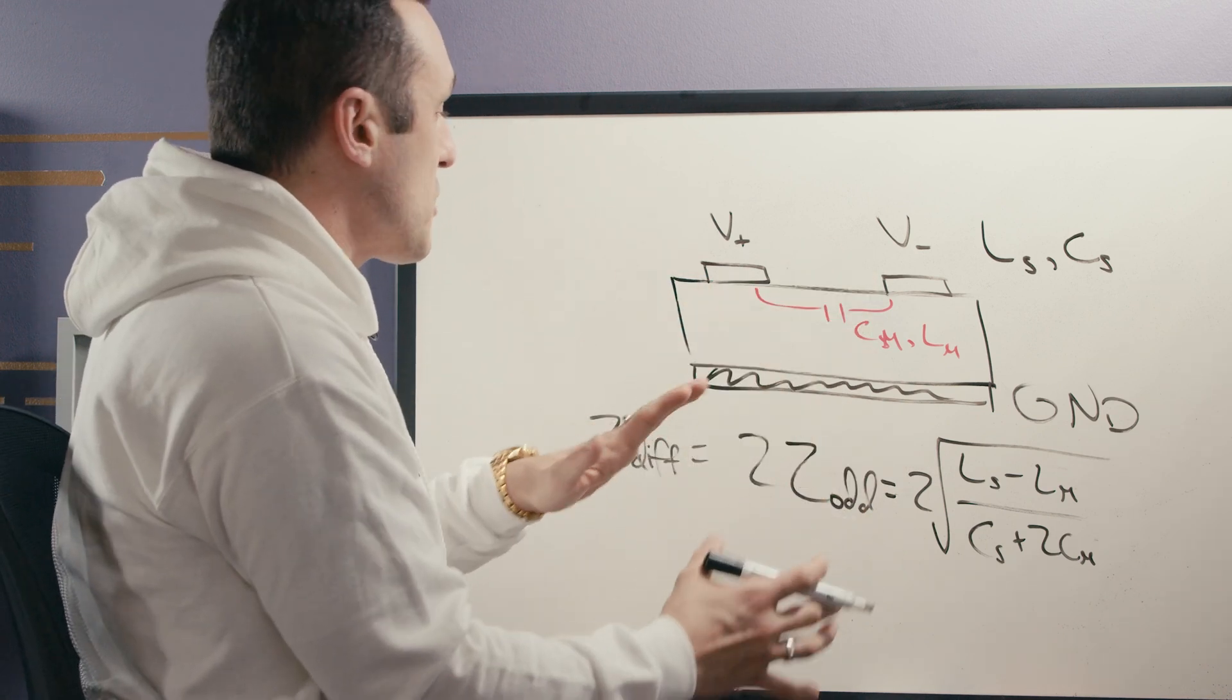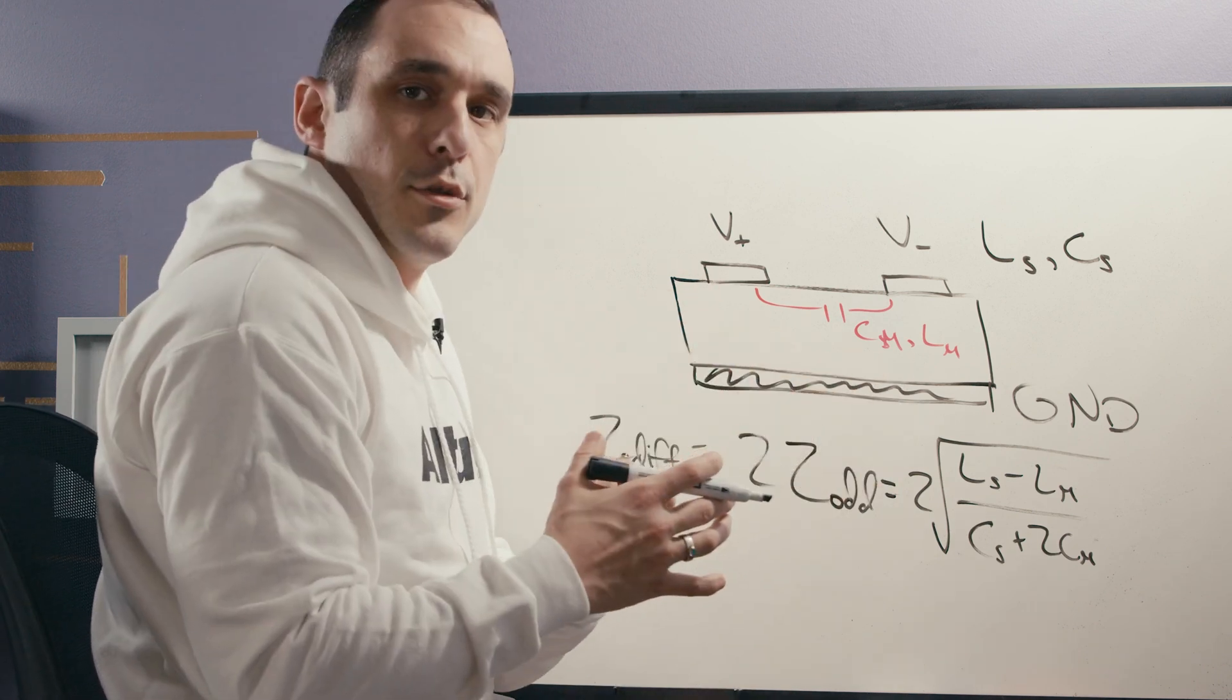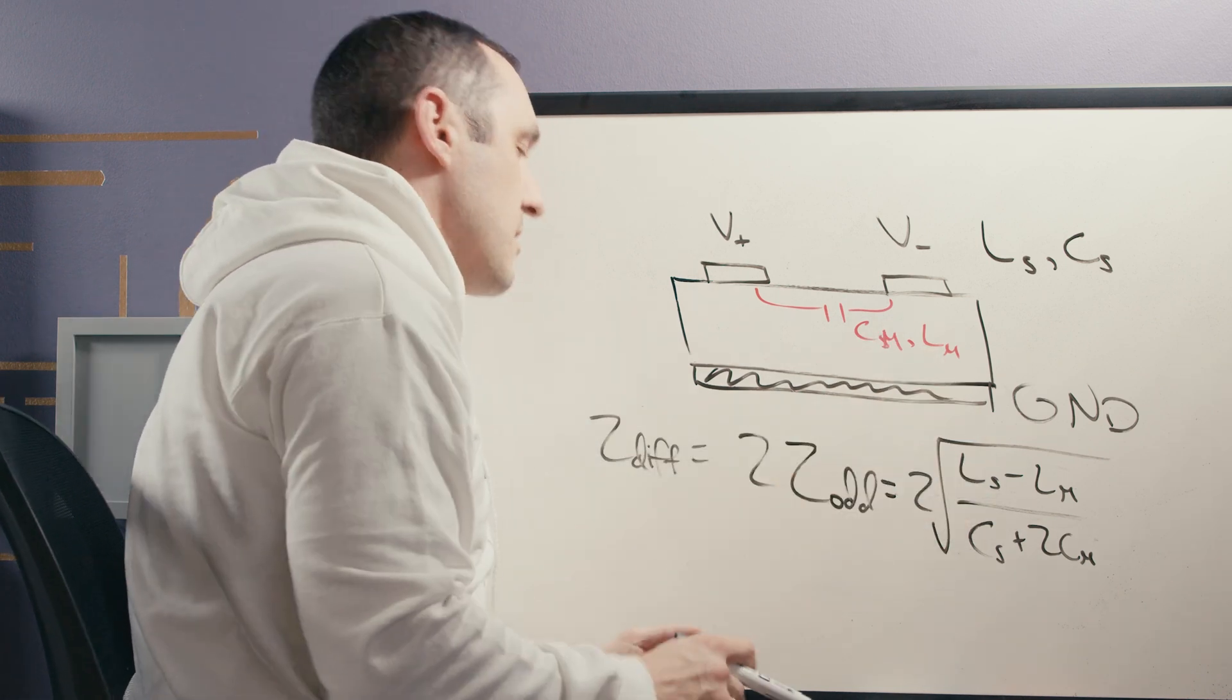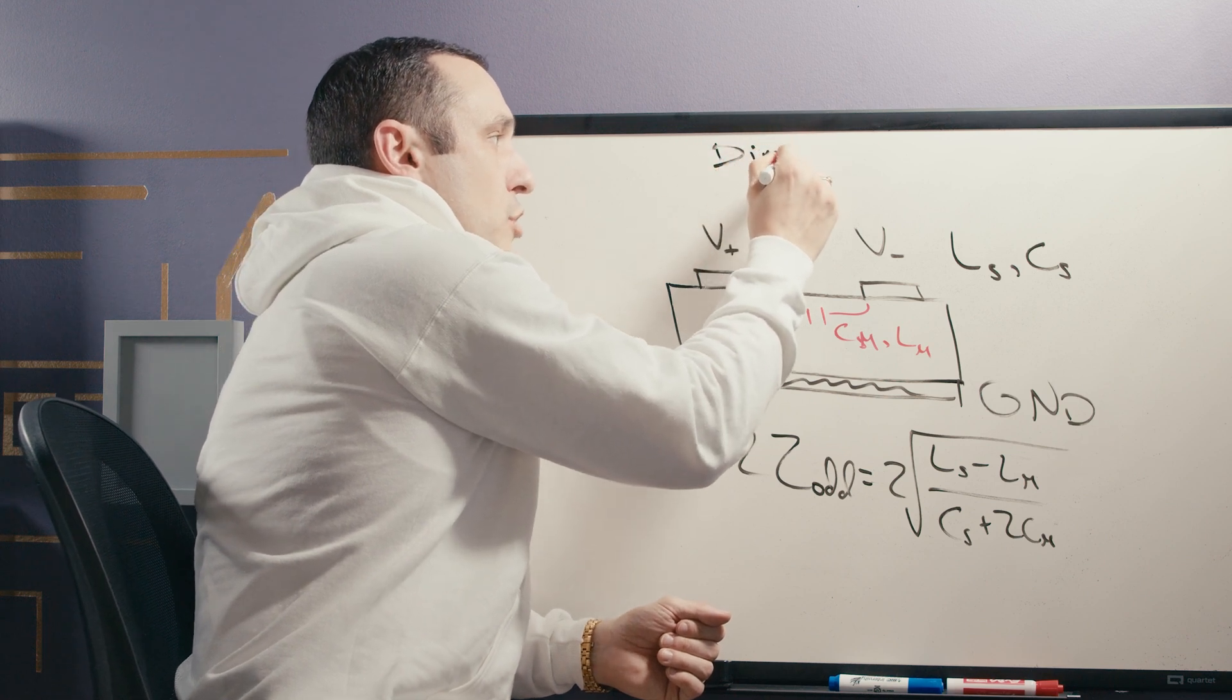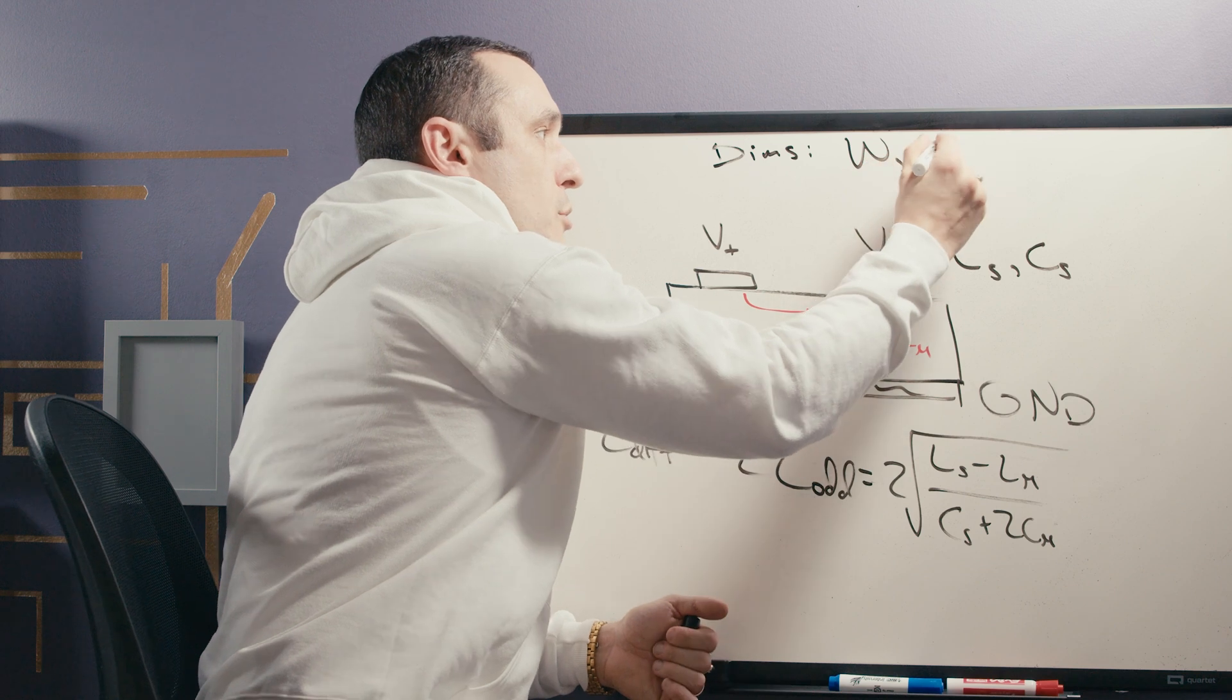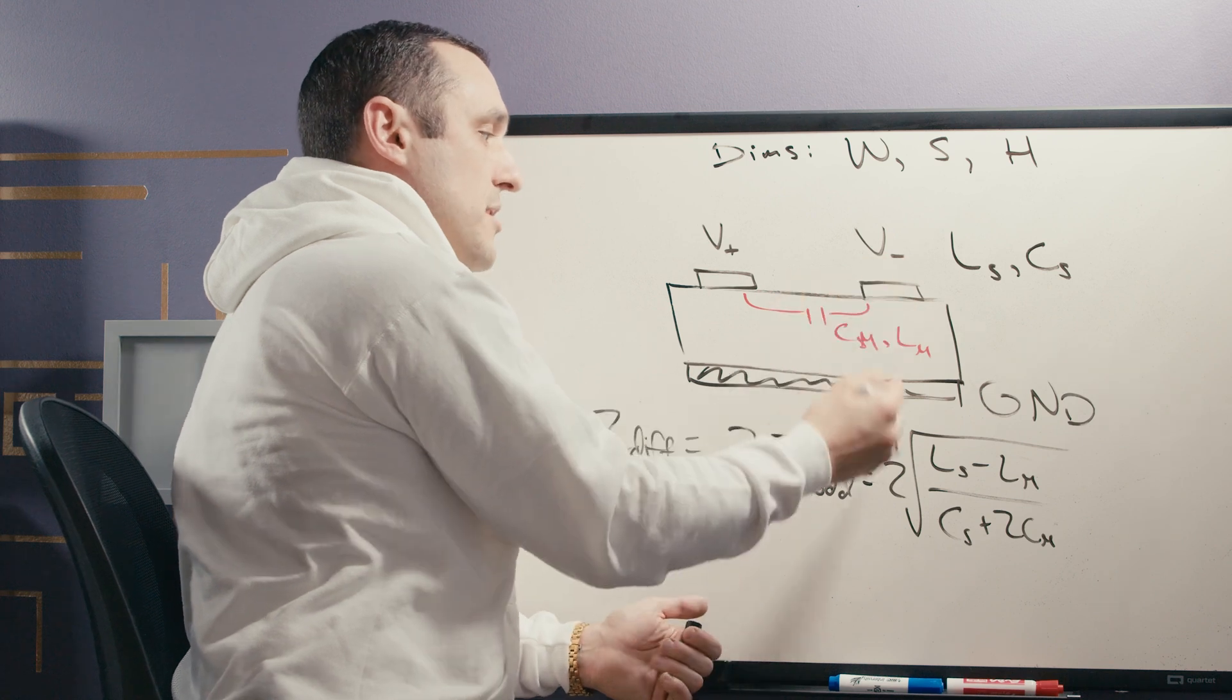Now of course there are loss terms because there's skin effect, there's dielectric loss, normally we would want to include those. But just for being able to understand the influence of ground, then we only need these terms in the differential impedance equation. Now here we haven't defined what are the dimensions of our traces or anything else in this system. We have a trace width, we have a spacing between the traces, and then we have a height of the substrate or a height of the traces above the ground plane. And then there's also a thickness of the traces and the thickness does start to matter once you get to very narrow line widths.